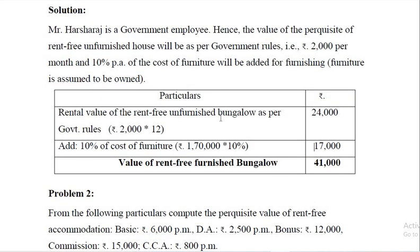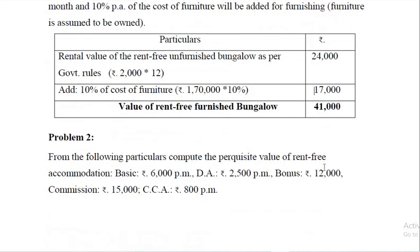So the perquisite value of unfurnished rent-free accommodation as per government rules is ₹24,000 — that is ₹2,000 per month for 12 months. As the furniture is owned by the employer (the government), 10% of cost of furniture is ₹1,70,000 into 10% = ₹17,000. So total perquisite value of the bungalow is ₹41,000.